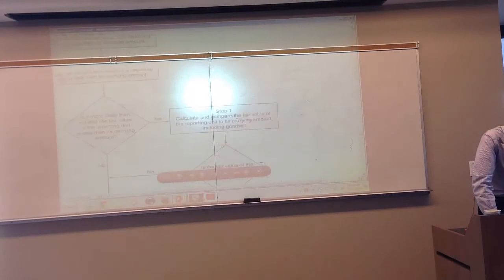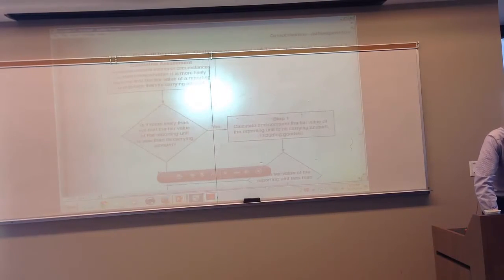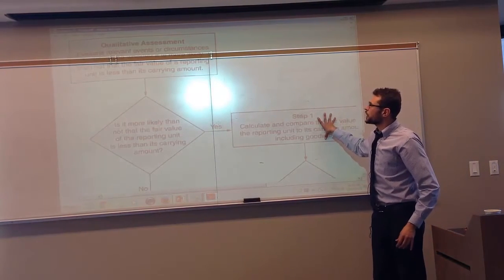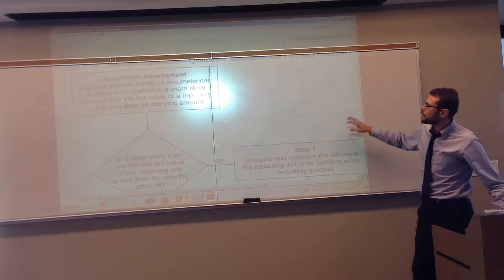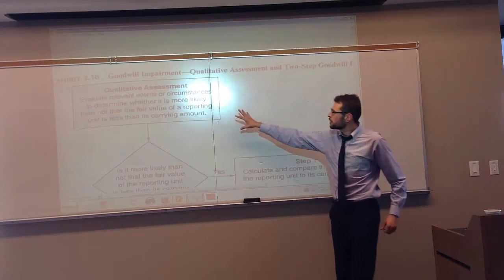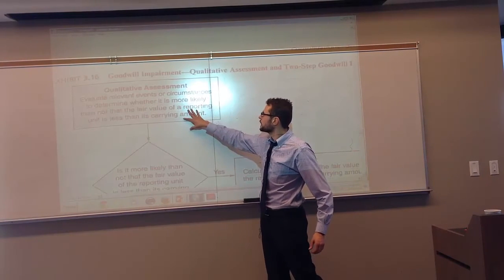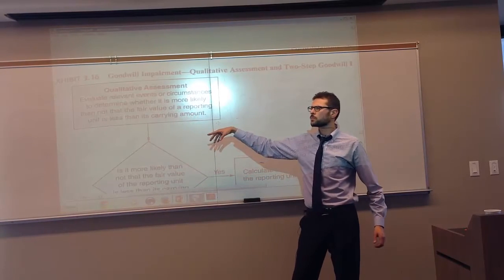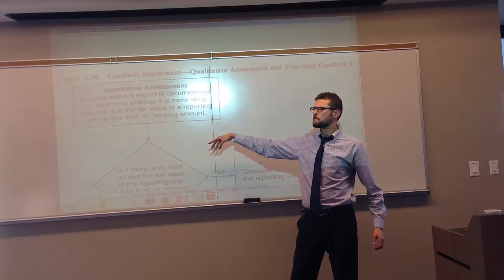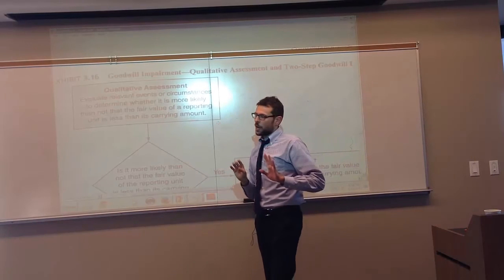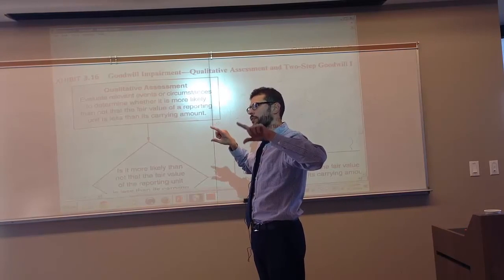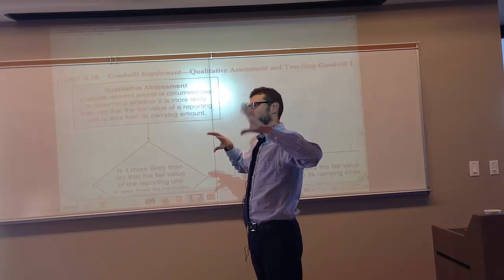The assessment we perform is sort of like a flowchart — you go through and try to figure out what's happening with the asset. You evaluate relevant events or circumstances to determine whether it's more likely than not that the fair value of the reporting unit is less than the carrying amount. When you buy Apple, for example, you record your goodwill based on the fact that the fair value exceeded the book value.